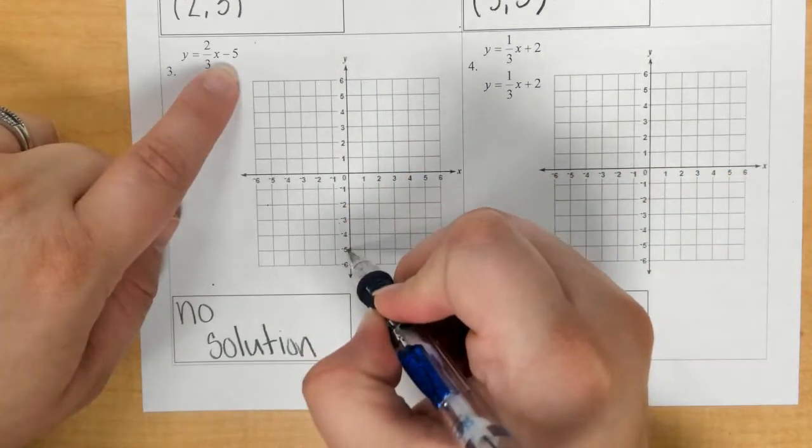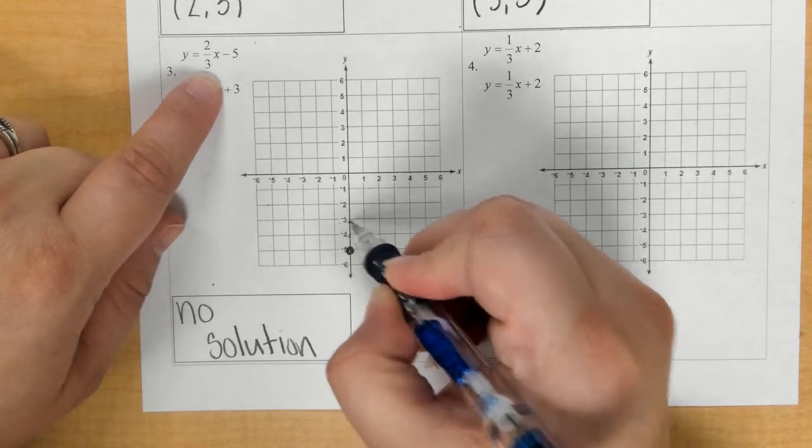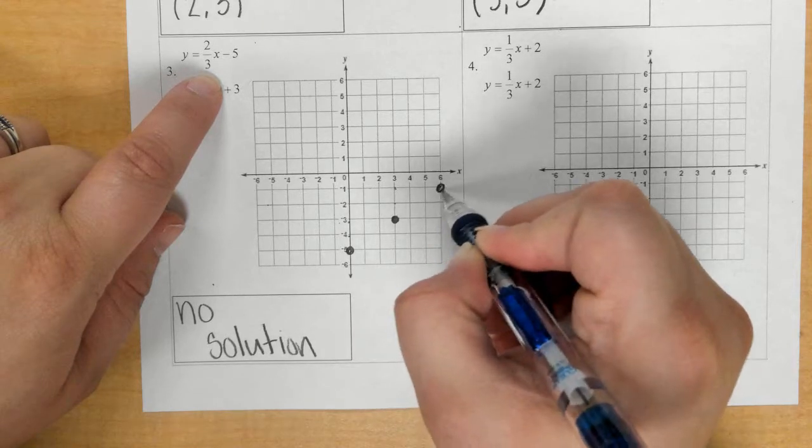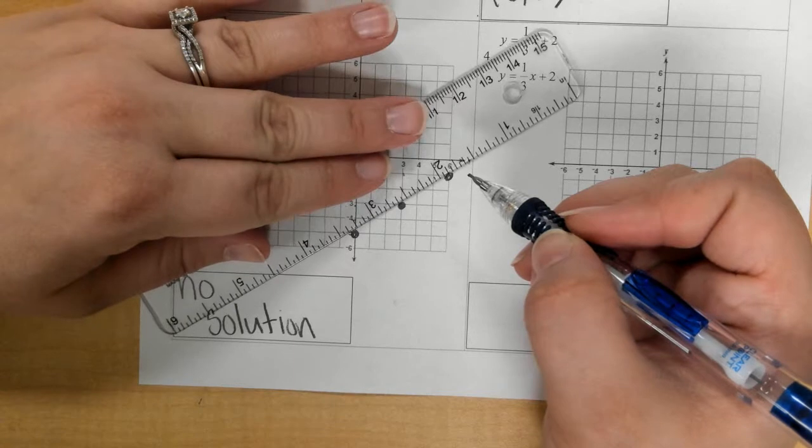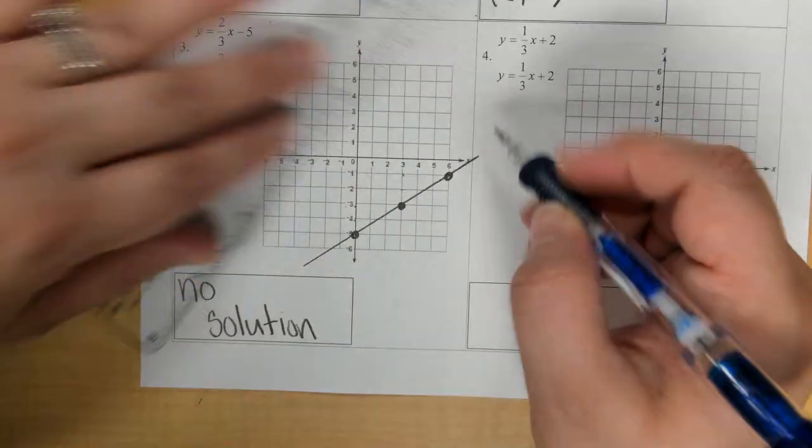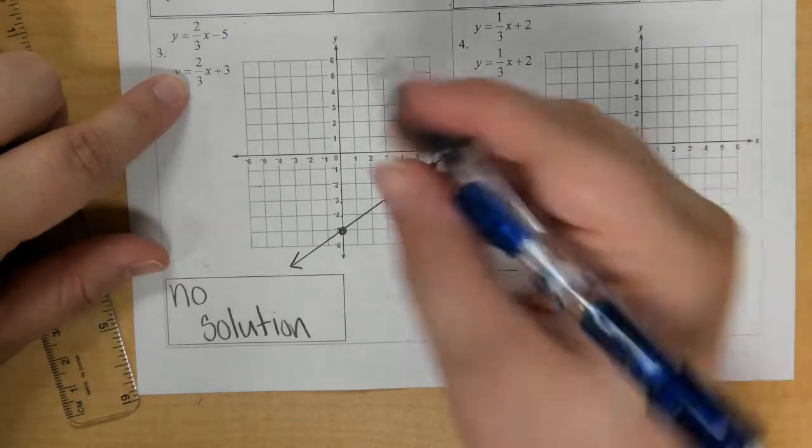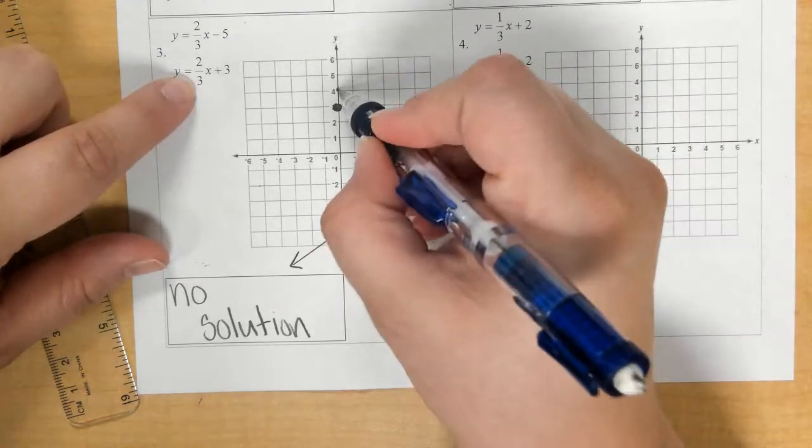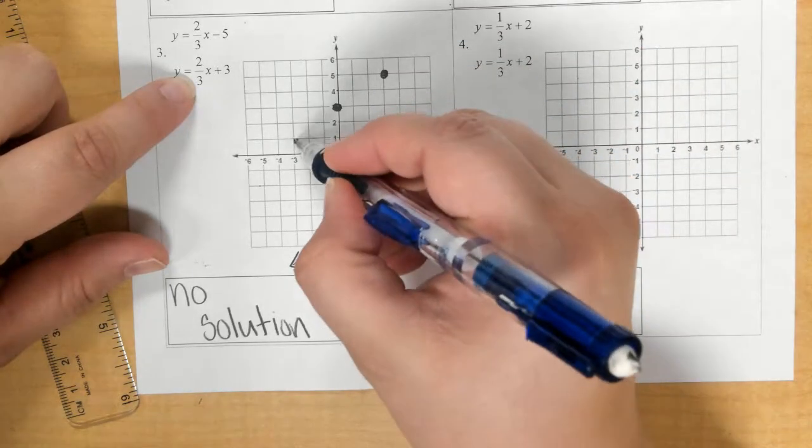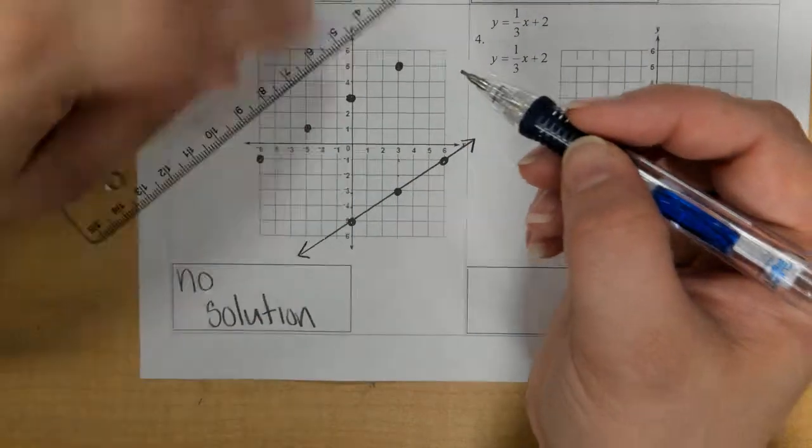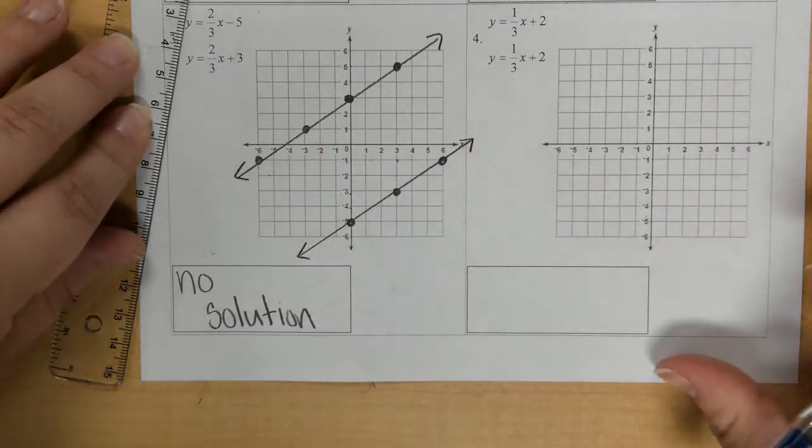I'm going to start at negative 5 on the y. Then rise 2, run 3. Then at positive 3, we're going to rise 2, run 3. Then also go down to left 3. As we can see, they are parallel lines. The lines don't touch, which is no solution.